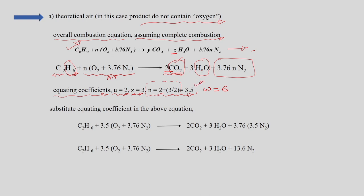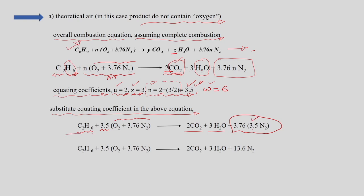By equating coefficients, we got U, Z, N, and W. Substituting these back into the equation gives: C2H6 + 3.5(O2 + 3.76N2) → 2CO2 + 3H2O + 3.76×3.5 N2. Simplifying, this gives approximately 13.16 moles of nitrogen in the product gas — this is the stoichiometrically balanced equation.